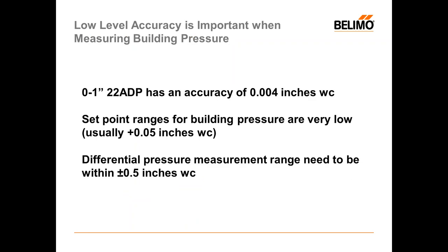Our zero to one inch sensor is really important when measuring building pressure because you're dealing with such low pressures — high accuracy is essential. Our zero to one inch 22ADP has an accuracy of 0.004 inches of water. Generally, a set point range for building pressure is plus or minus 0.05 inches of water. The differential pressure range must be a little bit larger than that — if your set point is 0.05 inches, you need a range a little larger to accommodate wind, stack effects, and pressure spikes beyond the sensor range.